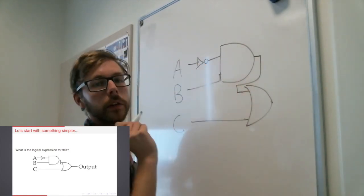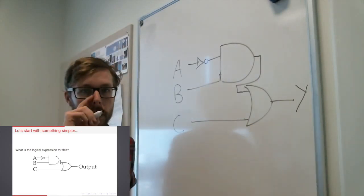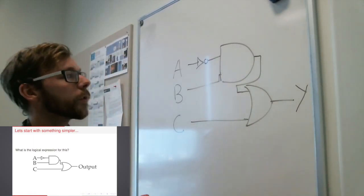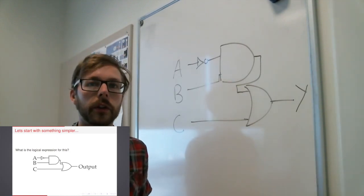That's an OR gate, that's an AND gate, that's a NOT, and then I've got my output, which I'm going to call Y, so I can fit it on my whiteboard. So what's the logical expression for this?